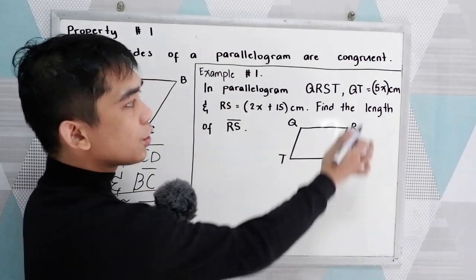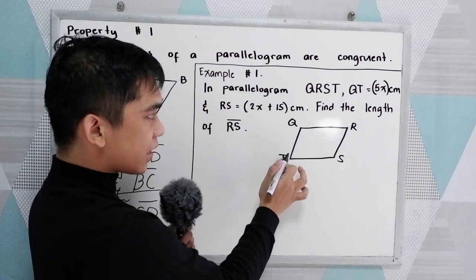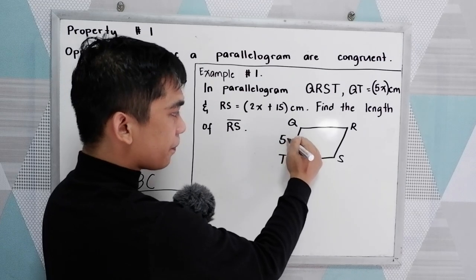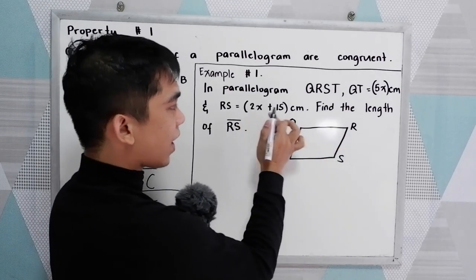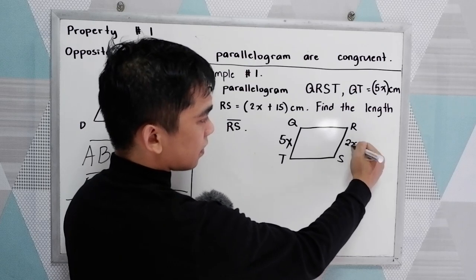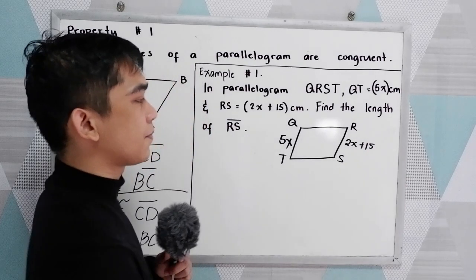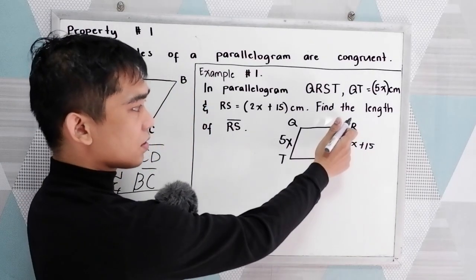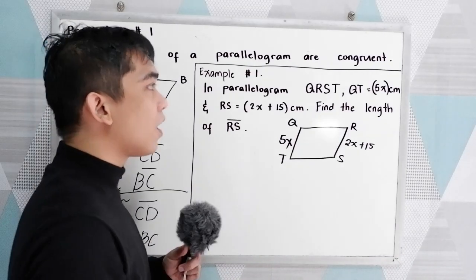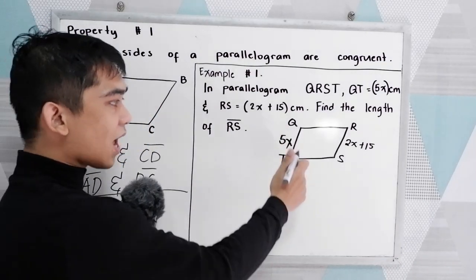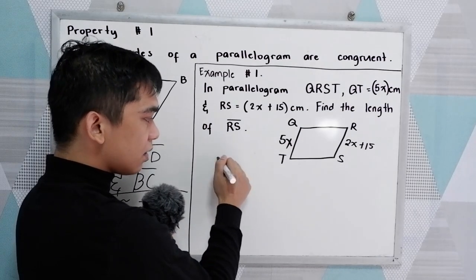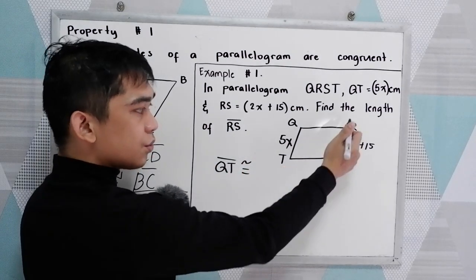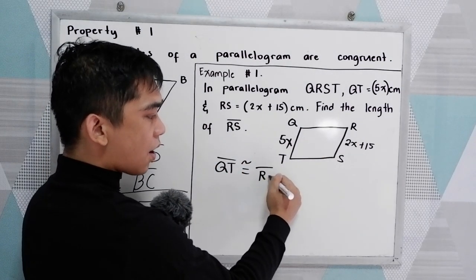Now QT, so QT is 5x cm. And RS is 2x plus 15 centimeters. Find the length of segment RS. Now property number one states that opposite sides are congruent. So we know that QT is congruent to RS.